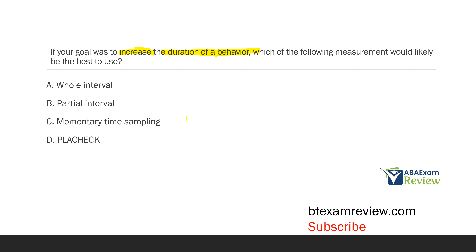Whole interval, however, is different. If we want to increase the duration of a behavior, we might go from 10-second intervals to 15-second intervals to 20-second intervals. The client has to engage in the behavior for the whole interval, no matter how long that interval is. That's going to slowly increase the duration of the behavior. So if our goal is to increase the duration of a behavior, the best measurement to use is A — whole interval.